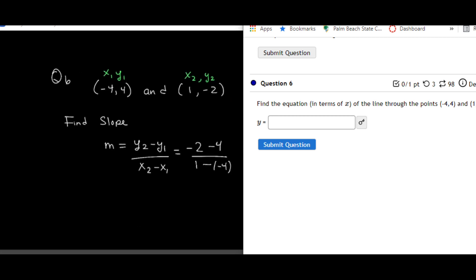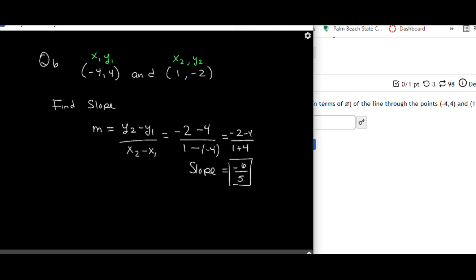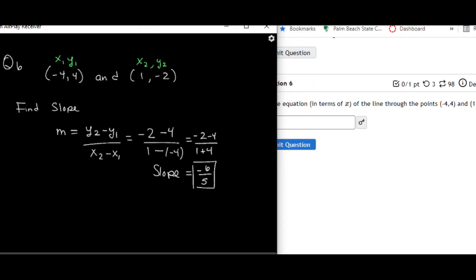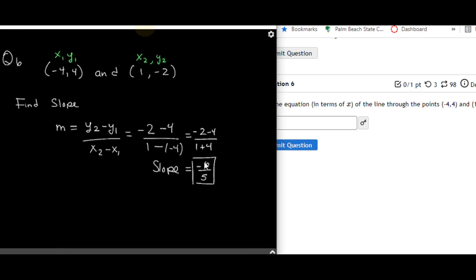Now to go ahead and simplify that, in the numerator, that is negative 2 minus 4. And in the denominator, that becomes 1 plus 4. So my final answer here is going to be negative 6 over a positive 5. And that will be my slope.